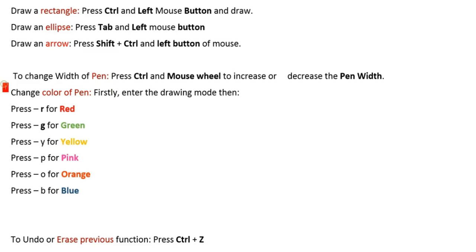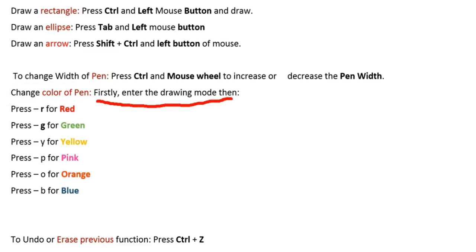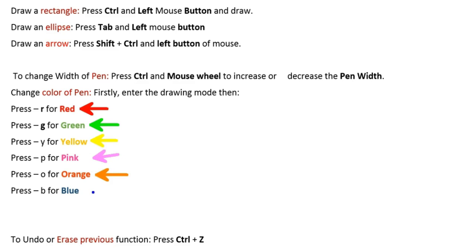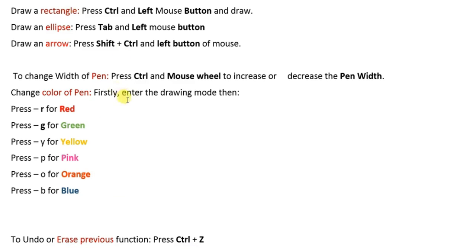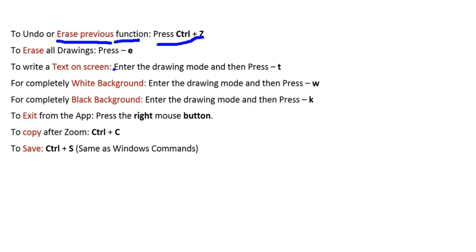To change the cursor color: press R for red, G for green, Y for yellow, P for pink, O for orange, B for blue. To undo or erase the previous drawing press Ctrl+Z, or press E to erase all drawings.